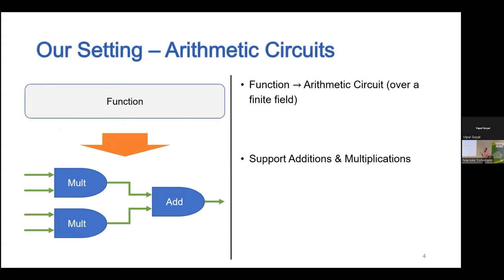In this talk I'll primarily be concerned with arithmetic circuits. An arithmetic circuit is defined over a finite field — each wire value comes from a field, and the circuit has either multiplication gates or addition gates in that finite field. One advantage of arithmetic circuits is that you can add or multiply large numbers in a single operation rather than breaking them into bits. For things like matrix multiplication, arithmetic circuits are a good model.